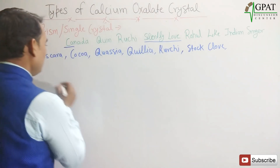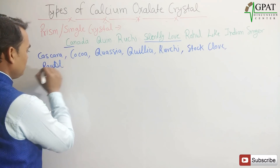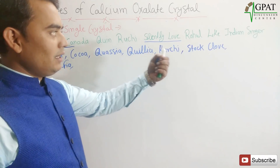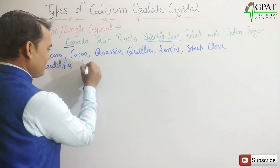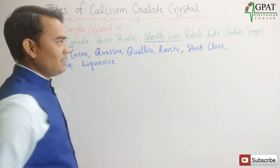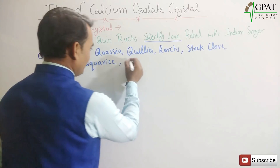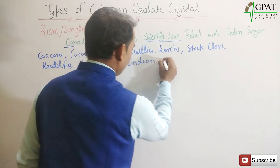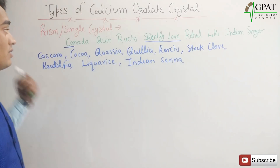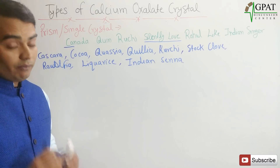'Rahul' stands for Rauwolfia, and 'like' stands for Liquorice. Then 'Indian singer' refers to Indian Senna. These are all the drugs which have the prismatic or single crystal type — very important.